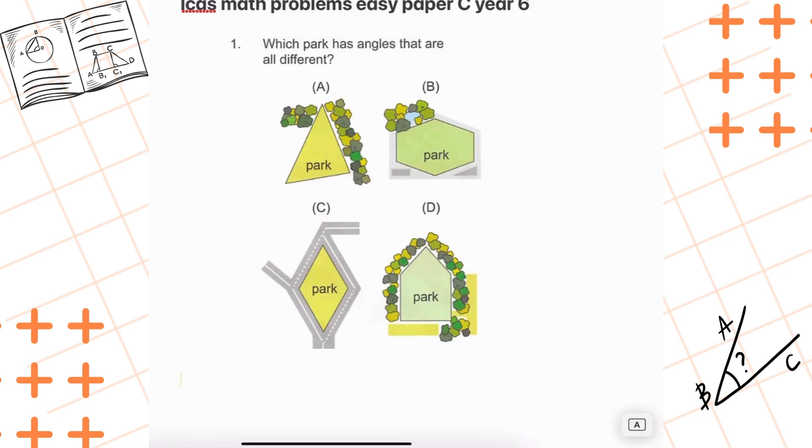On to park C. This park is shaped like a diamond or a rhombus. In a rhombus, opposite angles are the same. So park C doesn't have all different angles. Let's cross that one out too.